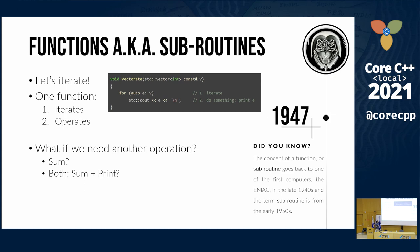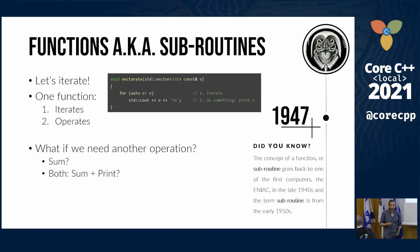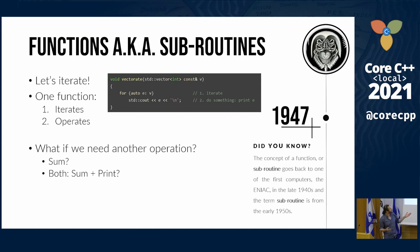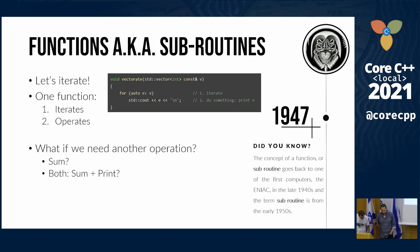Say we want to iterate over all the elements of a vector and print them out. We have a function or a subroutine called vector8, and you can see that it actually does two separate things. The first thing it does is it iterates over all the elements of the vector or the container or the sequence. And then it performs some kind of operation over each of the elements of this sequence. If I wanted to iterate over the elements and maybe sum them up and not print them, then I'd actually have to write a new function.